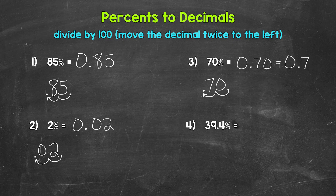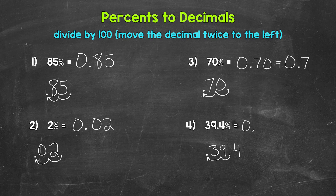Lastly, let's move on to number four, where we have 39.4%. So let's divide this by 100 in order to convert it to a decimal. So let's move the decimal once, twice, to the left. And we end up with 0.394. So 39.4% equals 0.394 — 394 thousandths.